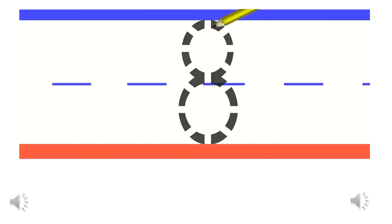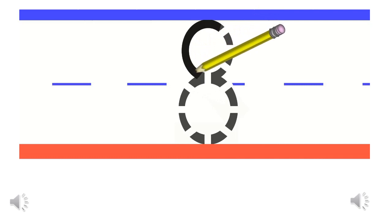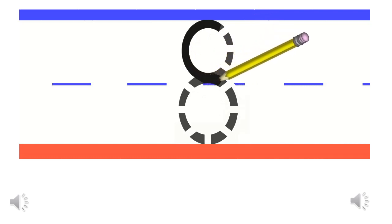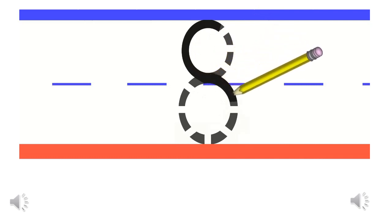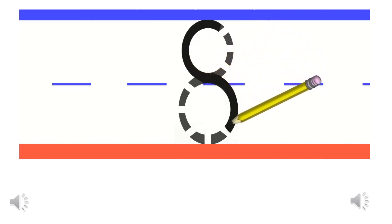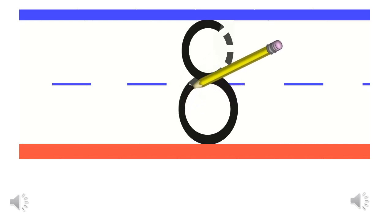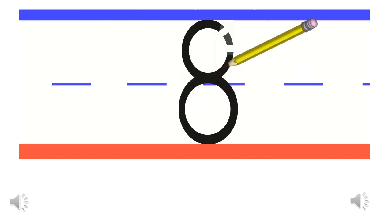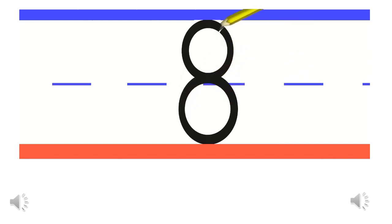To write the number 8, we'll start at the top, and do a curved line down to the middle, and do a curved line all the way down to the bottom, and curve around back to the middle, and do a curved line up to the top. Good job!